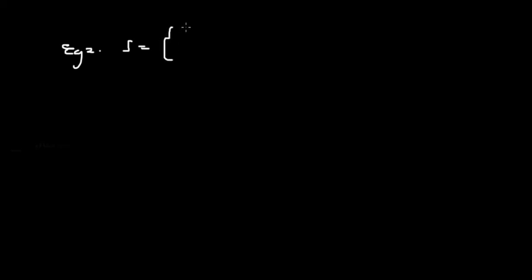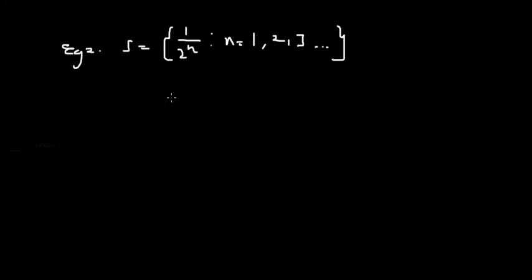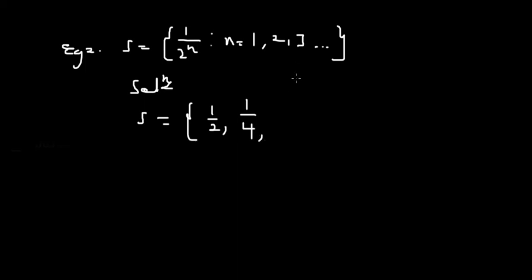Let's look at a second example. You are given the set S = {1/2^n} where n = 1, 2, 3, ... and you have to prove the Bolzano-Weierstrass theorem. First, generate the set: when n = 1, we get 1/2; when n = 2, we get 1/4; when n = 3, we get 1/8, and it continues like that. Now let's check whether this set has bounds.